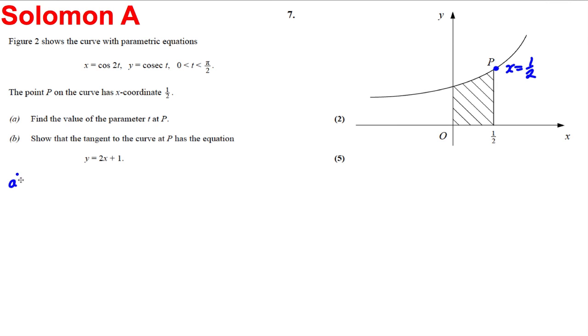So let's let a half equal cos 2t and solve this. So the inverse cos of a half, so 2t is going to be equal to the inverse cos of a half, and if we type that in our calculator, the inverse cos of a half, we get ourselves pi by 3.